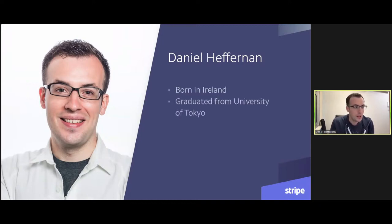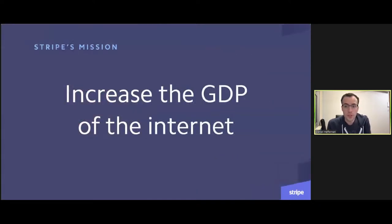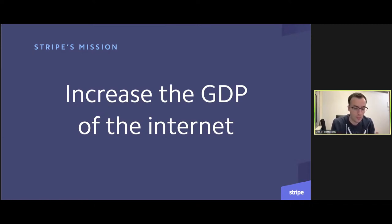My name is Daniel. I was born in Ireland, graduated from the University of Tokyo a long time ago now — 2013 — worked at Cookpad as an engineer and then joined Stripe in 2014 and have been here since. Stripe's mission is to increase the GDP of the internet. That might sound a little bit opaque, but the idea is that we want to enable new companies so that they can bring new value to the world. If we can provide the infrastructure that they need, we should be able to increase the size of commerce happening on the internet.